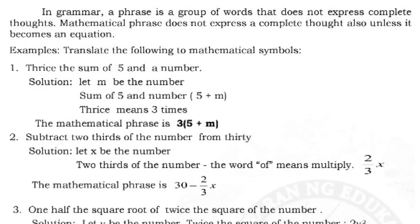In grammar, a phrase is a group of words that does not express a complete thought — a mathematical phrase also does not express a complete thought unless it becomes an equation. Example: translate 'thrice the sum of five and a number' to mathematical symbols. Let m be the number. The sum of five and a number is five plus m. Thrice means three times, so we multiply: 3(5 + m).